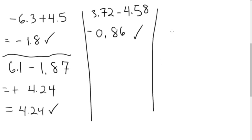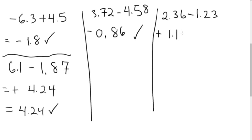Try one more example: 2.36 minus 1.23. Pause the video. If your thought process was — I have opposite signs, so I bring down the sign of the larger and take the difference of the absolute values. So 2.36 minus 1.23 is 1.13. Dropping the positive sign, the answer is just 1.13.